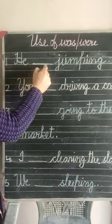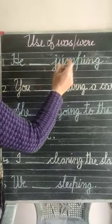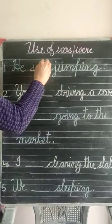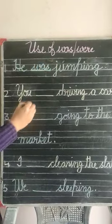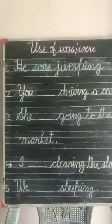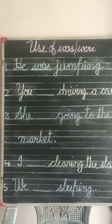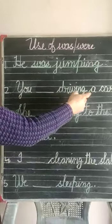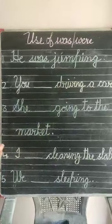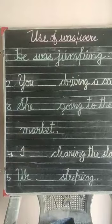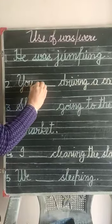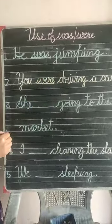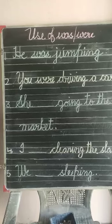He dash jumping — he ke saath was — He was jumping. Wo jump kar raha tha. You dash driving a car — means a car chala raha tha — you ke saath were. You were driving a car.